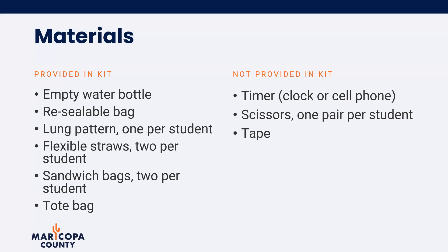First, gather all necessary materials. Provided in the kit is an empty water bottle, a resealable bag, lung patterns, flexible straws, sandwich bags, and a tote bag. Not provided in the kit are a timer, scissors, and tape.